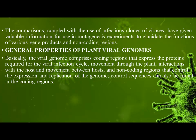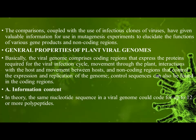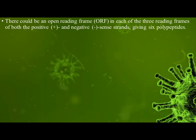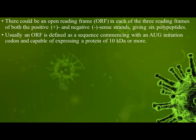Control sequences can also be found in the coding regions. Regarding information content, in theory the same nucleotide sequence in a viral genome could code for up to 12 or more polypeptides. There could be an open reading frame (ORF) in each of the three reading frames of both the positive and negative sense strands, giving six polypeptides. An ORF is defined as a sequence commencing with an AUG initiation codon and capable of expressing a protein of 10 kilodaltons or more.